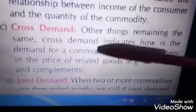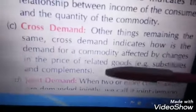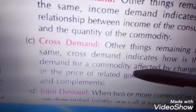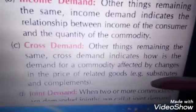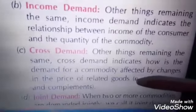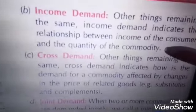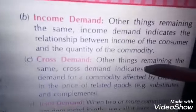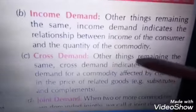Where other things remaining the same, cross demand indicates how the demand for commodities is affected by a change in the price of related goods. This basically refers to substitute goods, where if the price of one substitute good increases, the demand for the other increases. For example, when the price of tea increases, the demand for coffee increases. When you see that the price of tea has increased, you will shift your demand towards coffee. So the price is affected in terms of substitute goods.